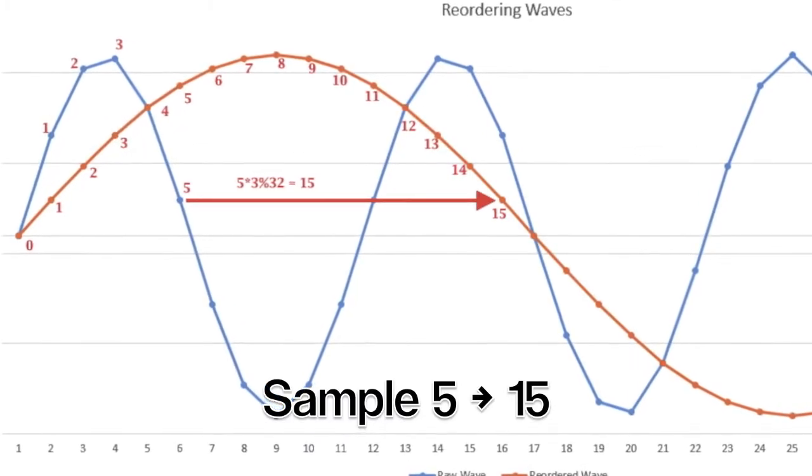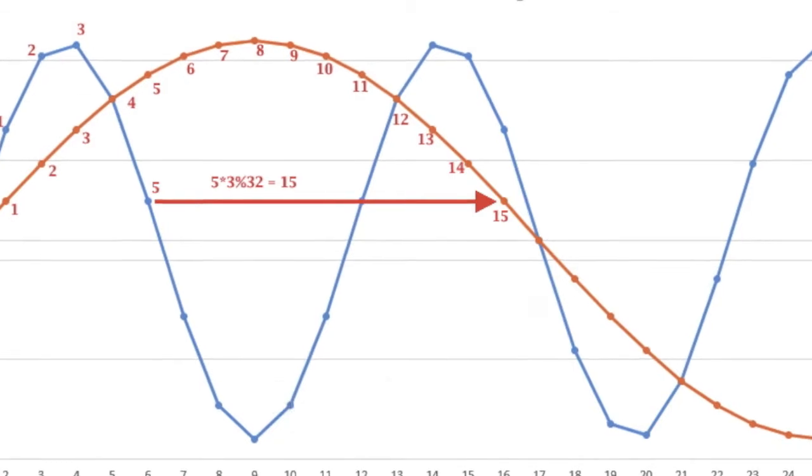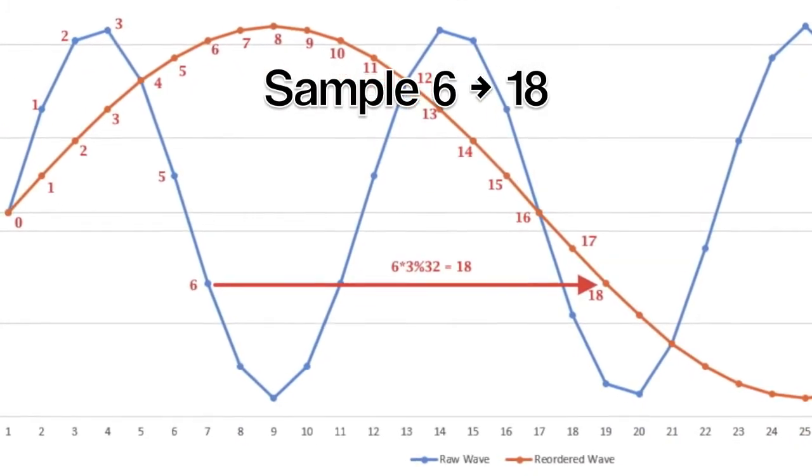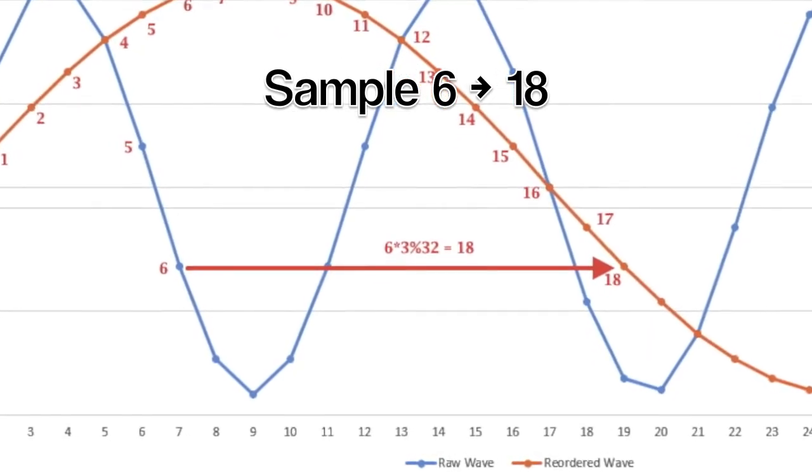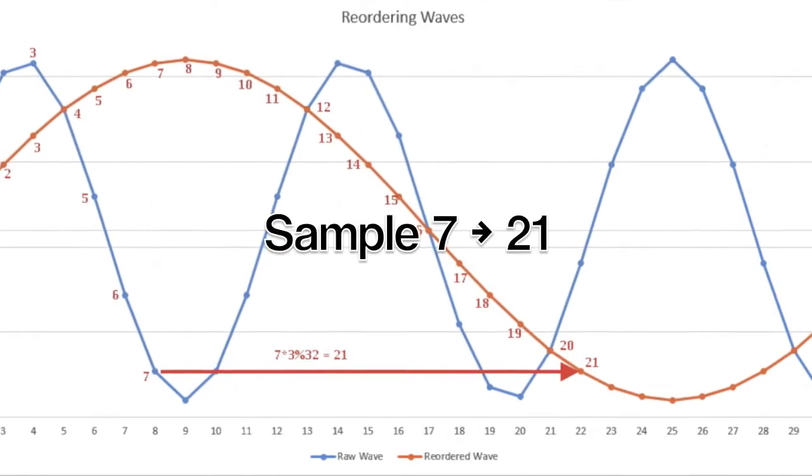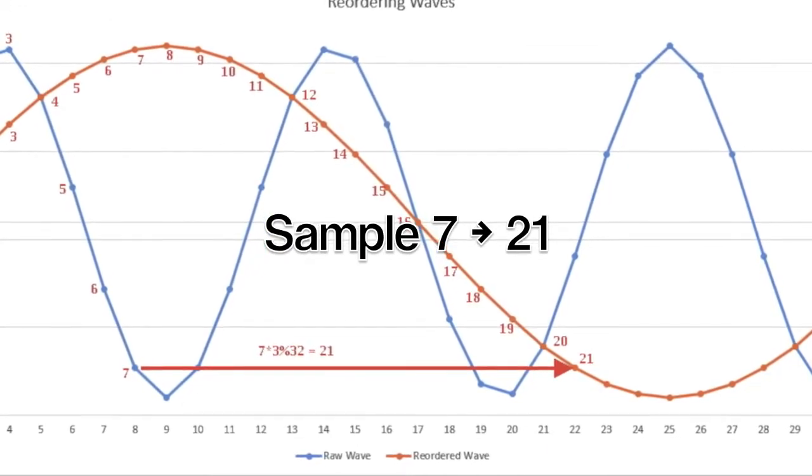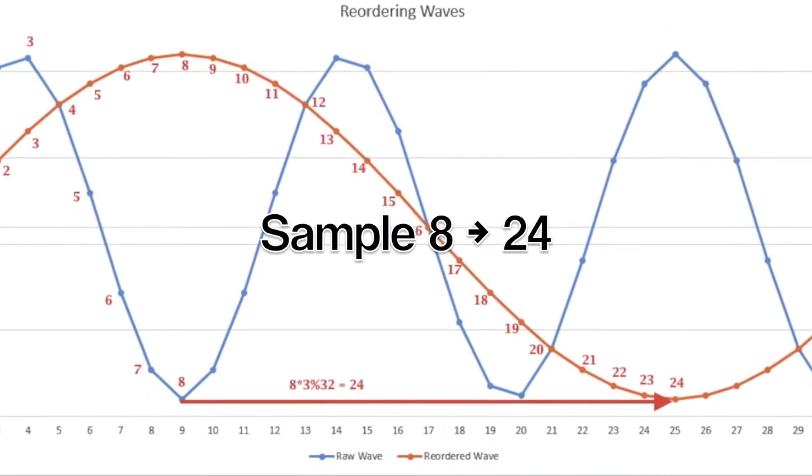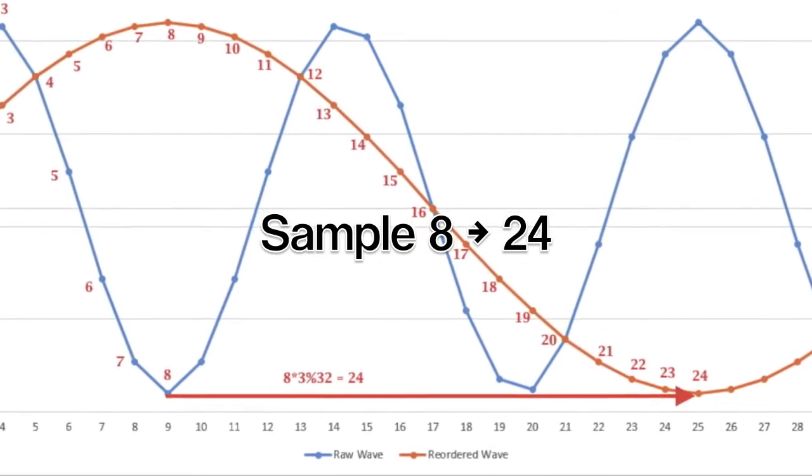Sample five really belongs in sample fifteen's place. Five times three is fifteen. Six times three is eighteen. So sample six gets moved to sample eighteen. Again, the modulo operator has no impact until we get to an answer bigger than thirty-two. Seven times three is twenty-one. So we move sample seven into the array at element twenty-one of the output array. Eight times three is twenty-four. Notice that this is the negative peak and clearly that is where sample eight really belongs.